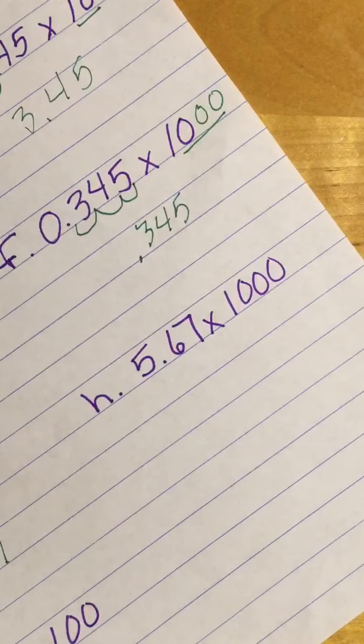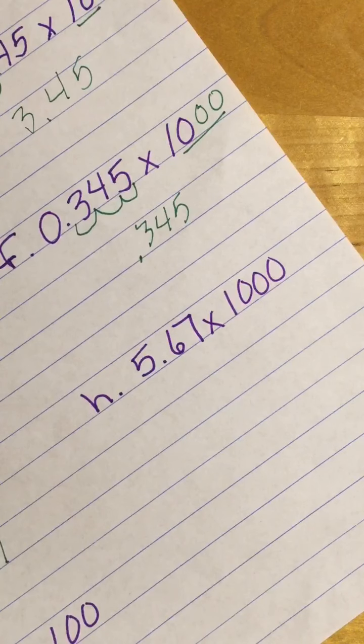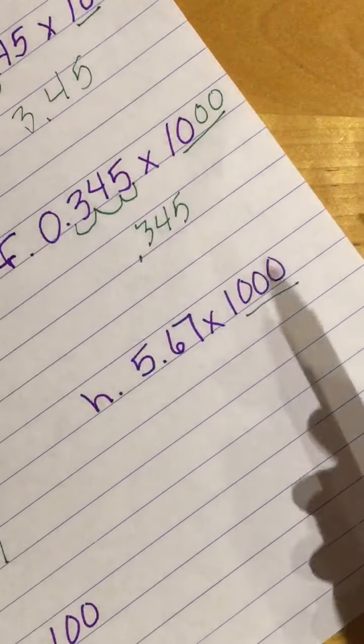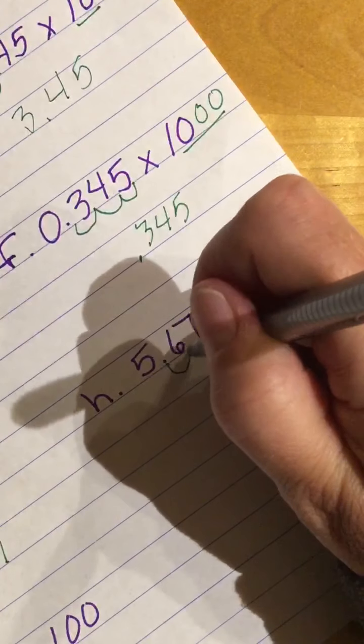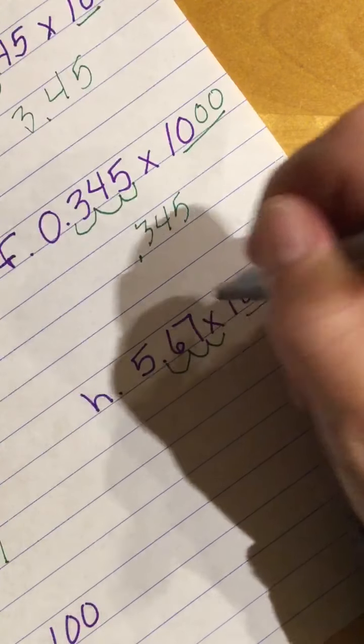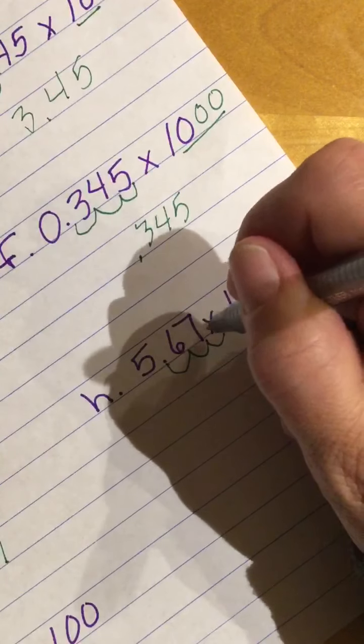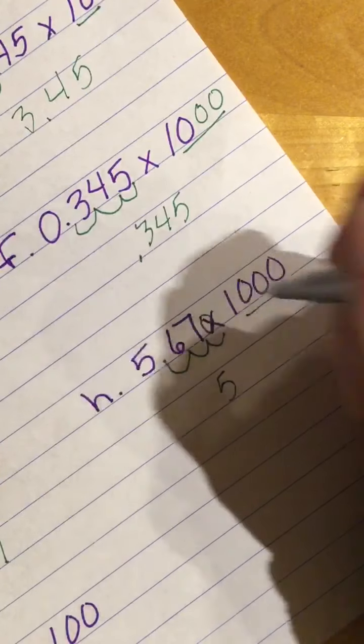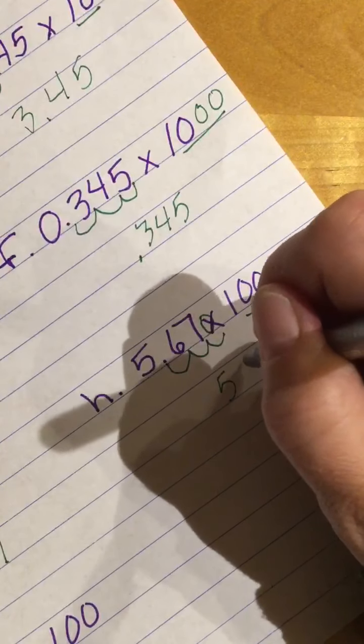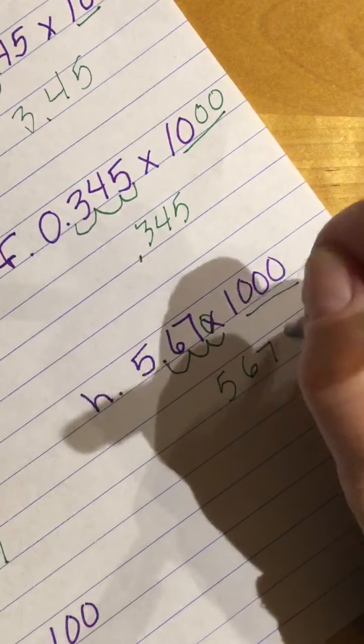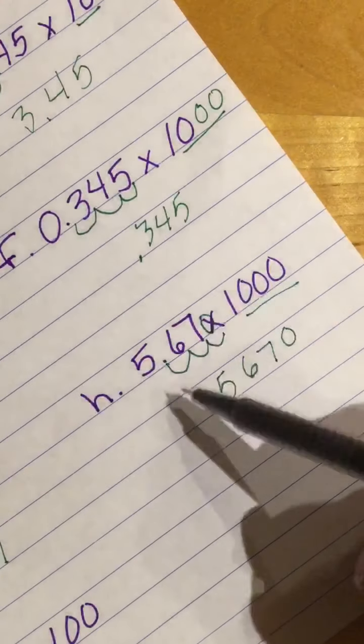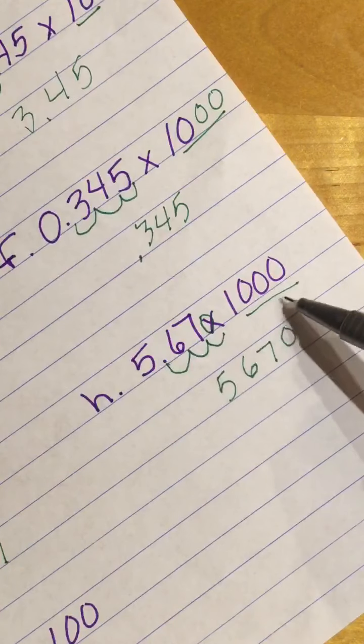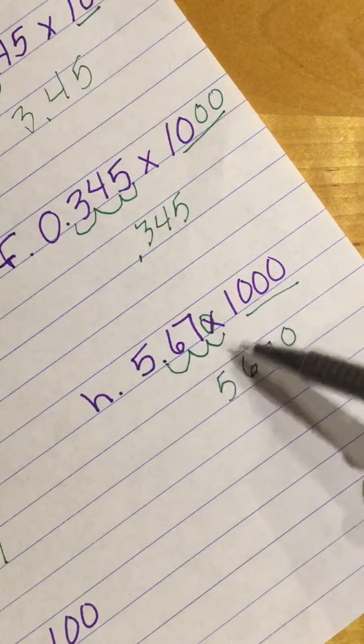Here we go. I have 5 and 67 hundredths. I am going to multiply this times 1,000 with three 0s. So I will go 1, 2, 3. What do I need to put in place at the end when I have this extra place? I put my 0. So I will have 5,670, which is logical. My number should be getting that much larger when you think about 5 times 1,000.